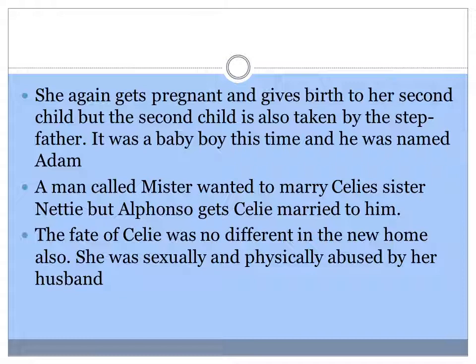She again gets pregnant for the second time and gives birth to a child named Adam. The second child is a baby boy. This time also the stepfather takes the child away from her and she has no news of the baby. A man called Mr. wants to marry Celie's sister Nettie, but Alfonso gets Celie married to him instead. The fate of Celie was no different in the new home; she was sexually and physically abused by her husband.